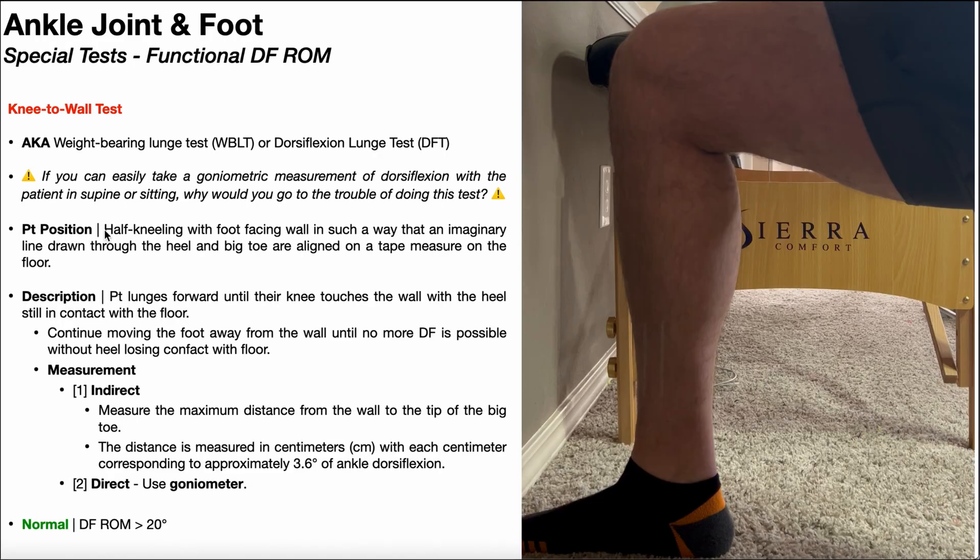To perform this test, the patient's going to be positioned in half kneeling, as you see right here, with the foot of the test side ankle facing the wall in such a way that an imaginary line drawn through the heel and the big toe are aligned on a tape measure on the floor. Note that the tape measure does not have to be there while you're performing the test. You can always add it in after the test is complete.